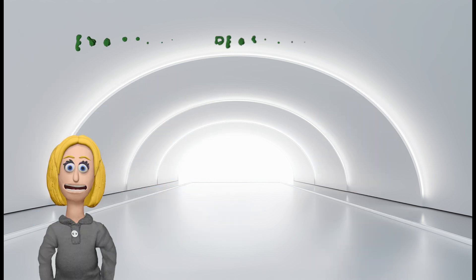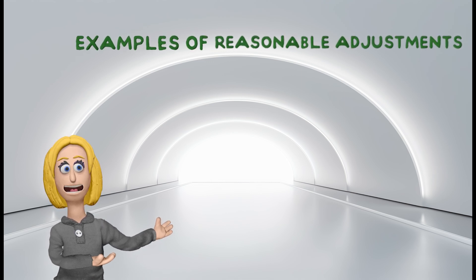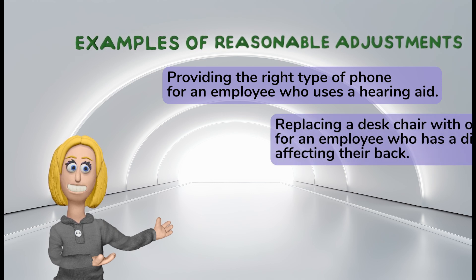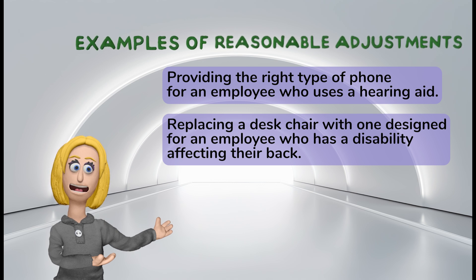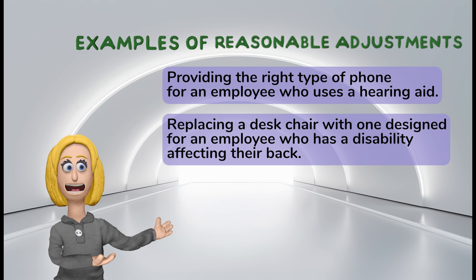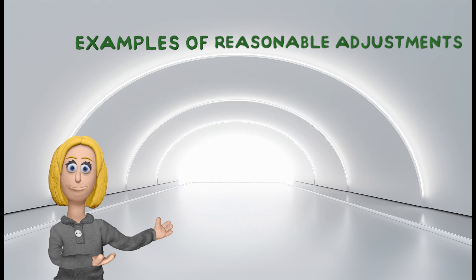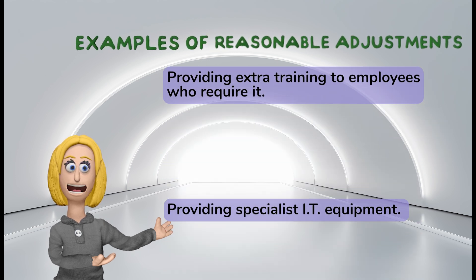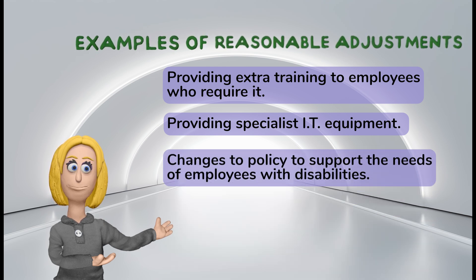Some examples of reasonable adjustments may include provisions such as providing the right type of phone for an employee who uses a hearing aid, replacing a desk chair with one designed for an employee who has a disability affecting their back, changing deadlines or workloads, agreeing on flexible working hours, providing extra training to employees who require it, providing specialist IT equipment, and changes to policy to support the needs of employees with disabilities.